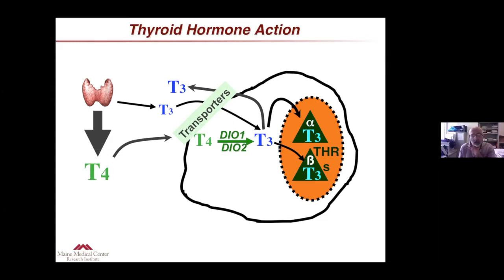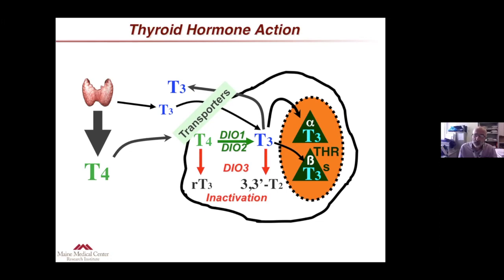More central to my presentation today is the possibility that both the main hormone T4 and the active hormone T3 can be transformed into inactive metabolites by yet another deiodinase enzyme called DIO3, which I will be talking about today.